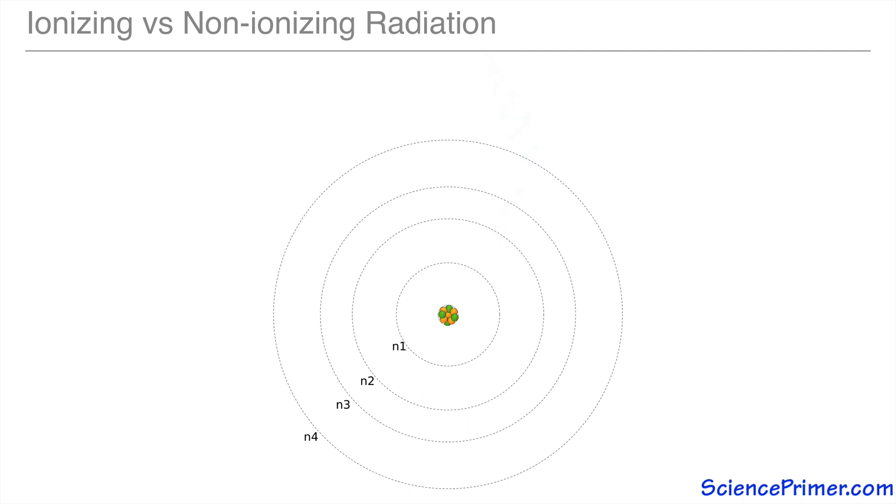Given the number of electrons in the atom of each element, there is a fixed number of energies that can be absorbed by the atoms of any particular element, and a fixed number of energies associated with the re-release of that energy when the electrons return to their stable state.